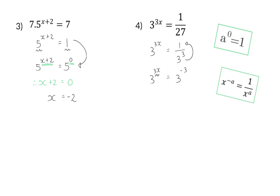Now, the exponent on the left is equal to the exponent on the right, which means that 3x should be equal to minus 3. And if I divide both sides by 3, x will be minus 1.